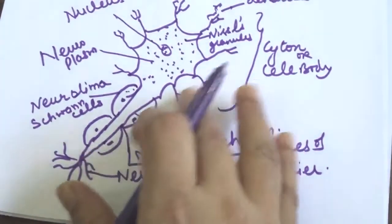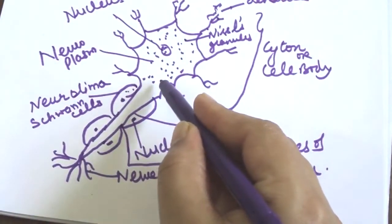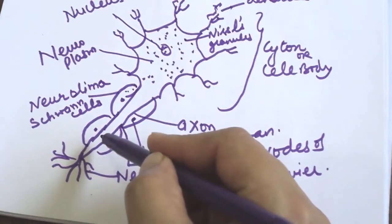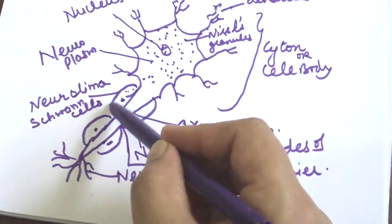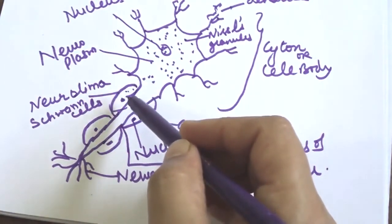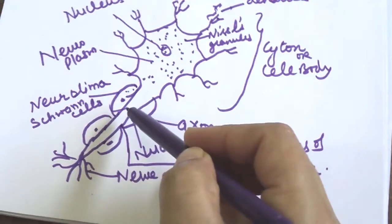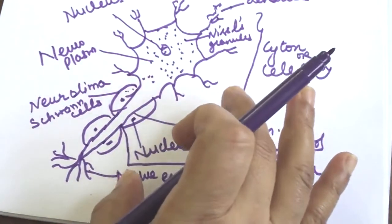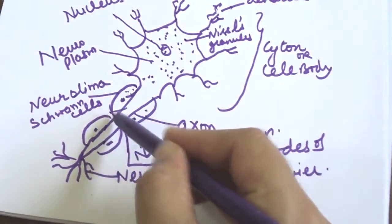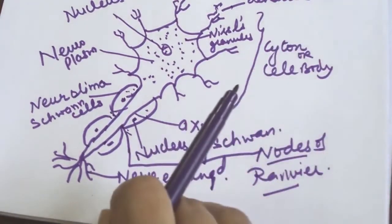The axon is a long, slender tubular structure of uniform diameter. It arises from the distal part of the cytone. Axon contains neurofibrils but is devoid of Nissl granules. It is surrounded by a sheath known as the neurilemma and Schwann cells. The axon is also called the nerve fiber. Myelinated nerve fiber is where the sheath is present; where the sheath is absent, those points are the non-myelinated Nodes of Ranvier.